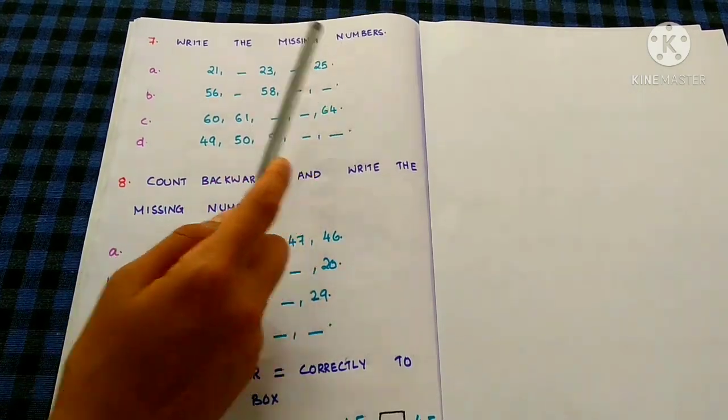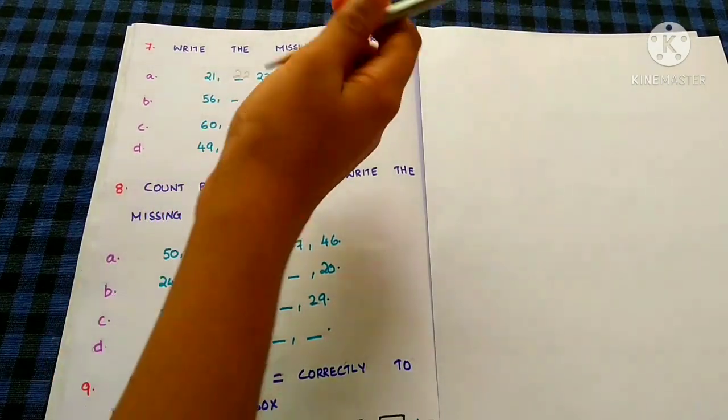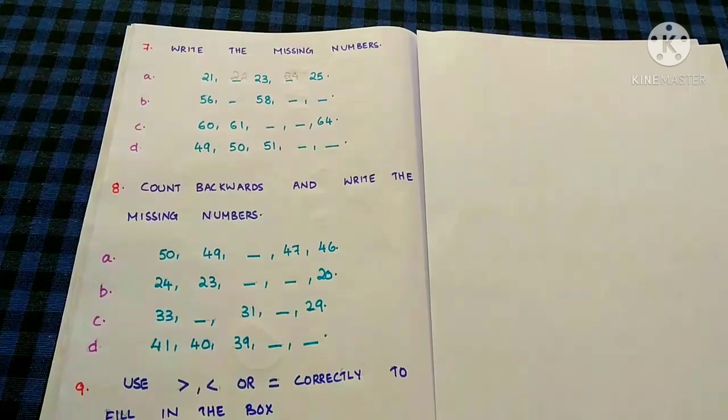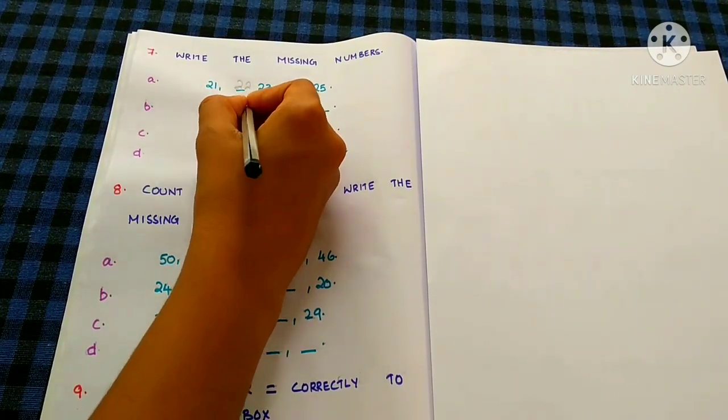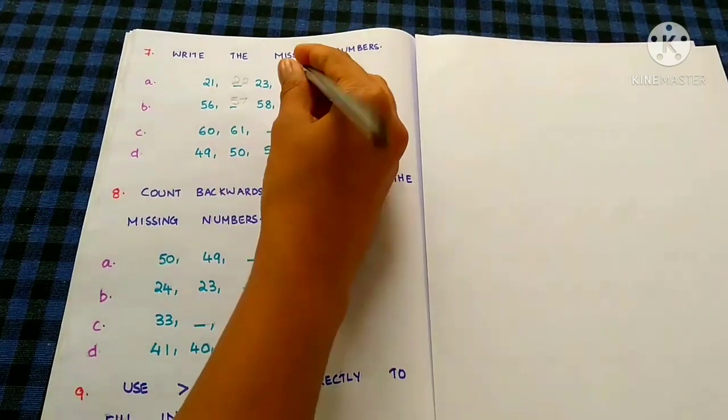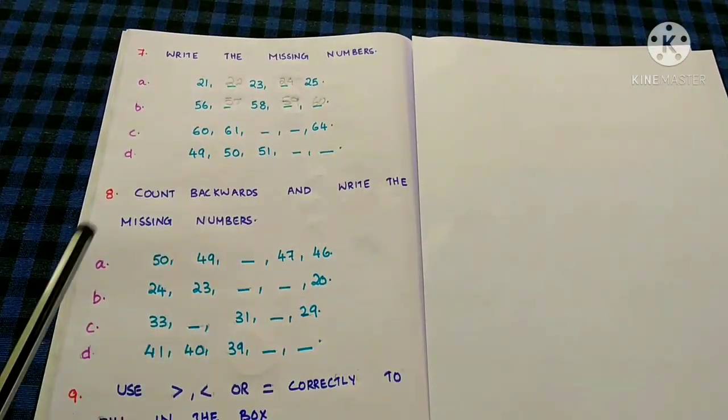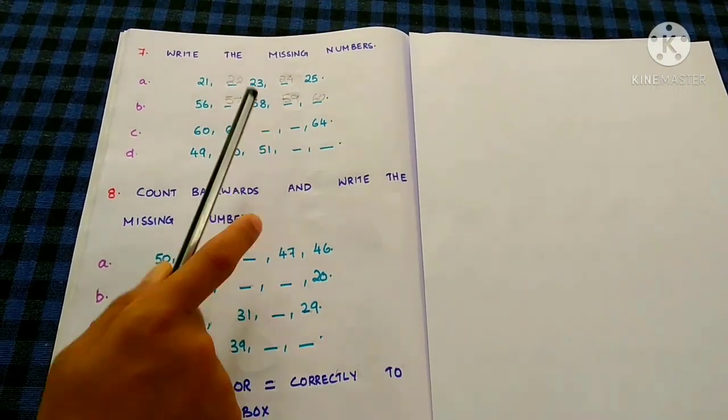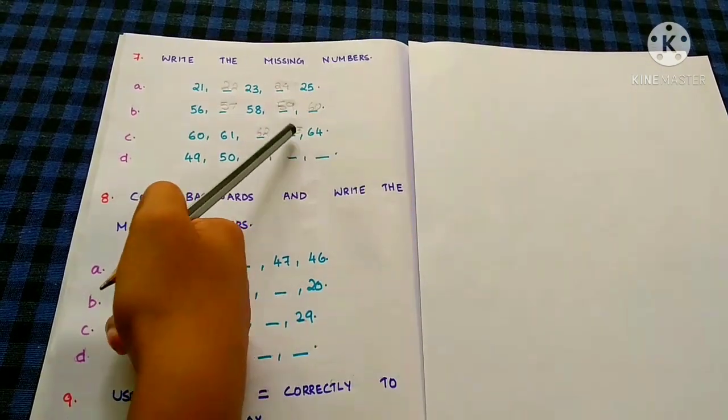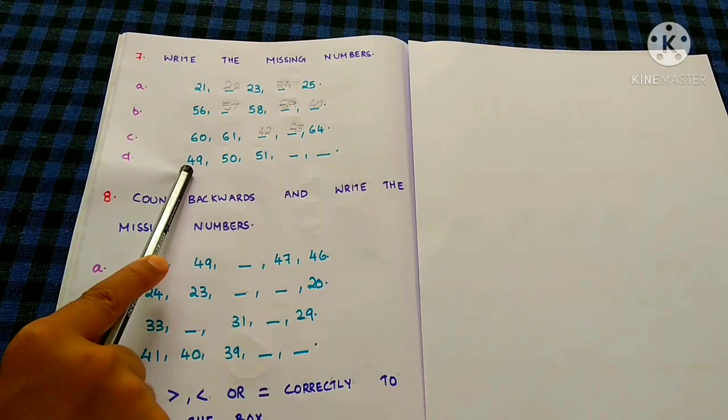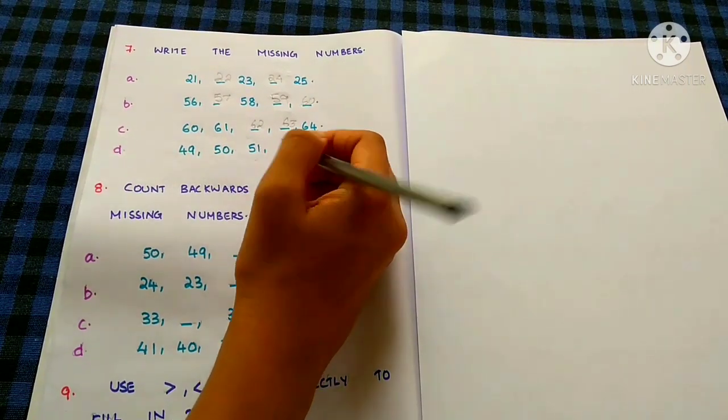Write the missing numbers. 21, 22, 23, 24, 25. 56, 57, 58, 59, 60. 60, 61, 62, 63, 64. 49, 50, 51, 52, 53.